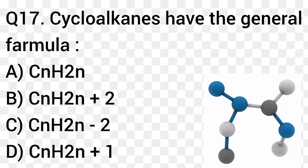Question number 17. Cycloalkanes have the general formula: Option A: CnH2N. Option B: CnH2N plus 2. Option C: CnH2N minus 2. Option D: CnH2N plus 1. The right answer is option A, CnH2N.